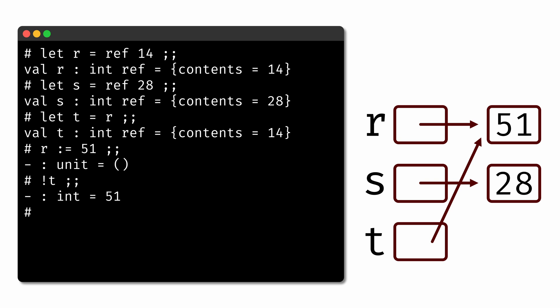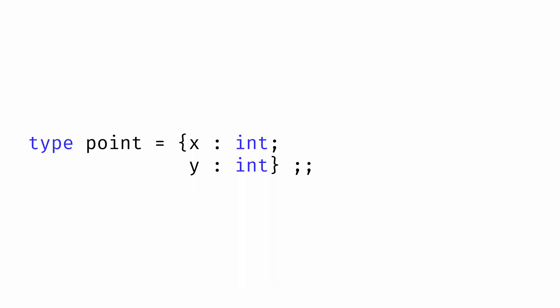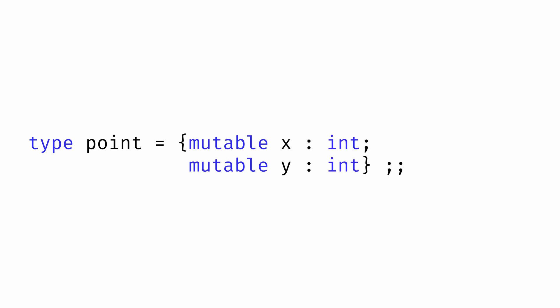OCaml has other data types for working with mutable data too. We have already seen record types that store a collection of values identified by their label. Here is a record type representing a point in 2D space by storing an x and a y value. If we wanted to make parts of a record mutable, OCaml allows us to add the mutable keyword before any field of a record to specify that the field can be mutated.